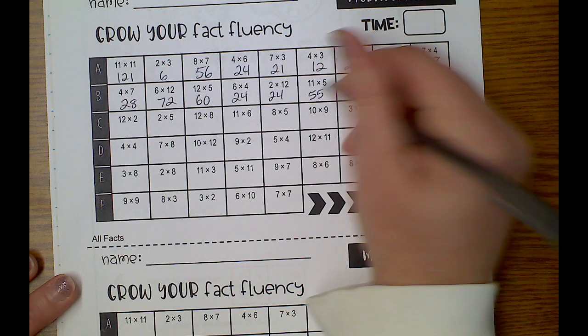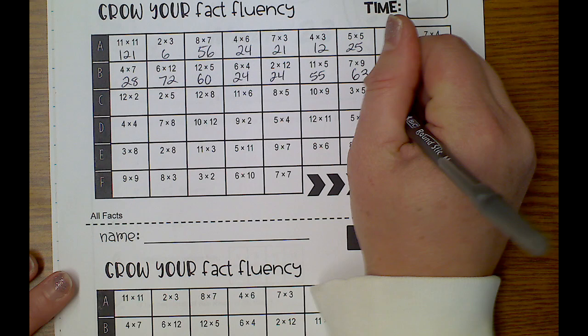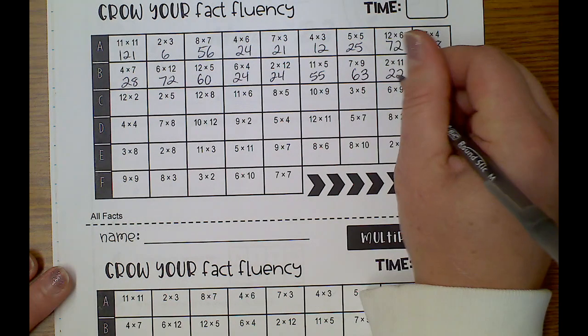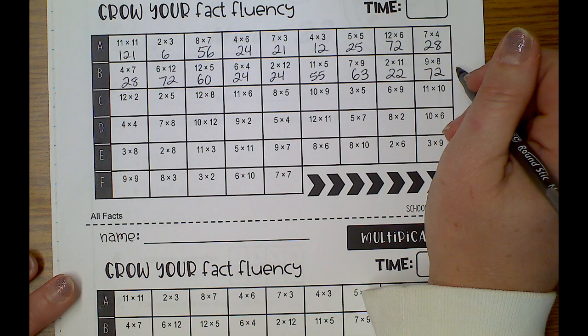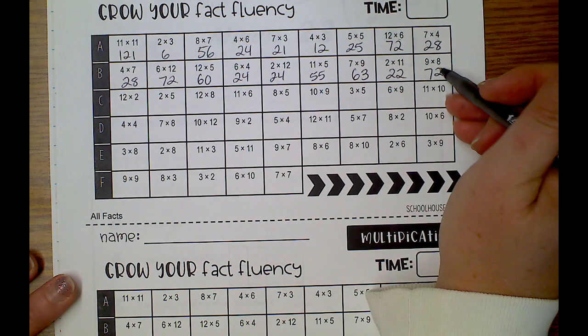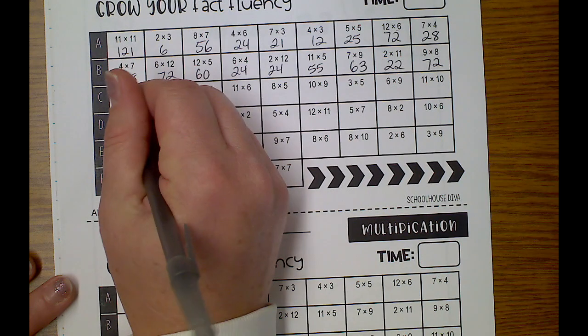11 times 5 is 55. 7 times 9 is 63. 2 times 11 is 22. 9 times 8 is 72. Oh, look at that. 12 times 12 times 2 is 24.